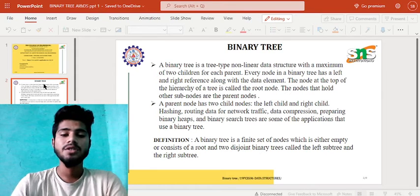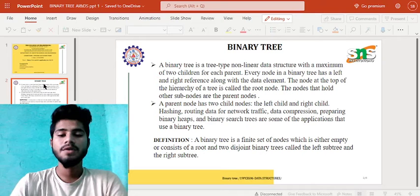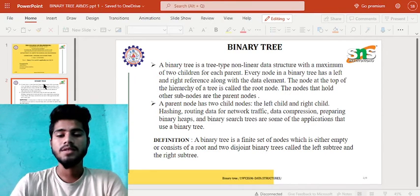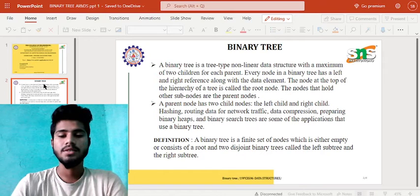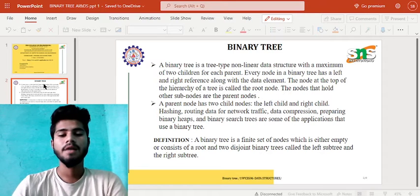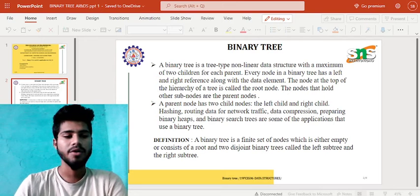The definition of a binary tree: A binary tree is a finite set of nodes which is either empty or consists of a root and two disjoint binary trees called the left sub-tree and right sub-tree.